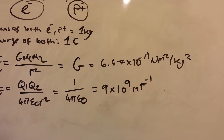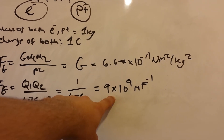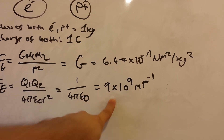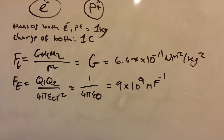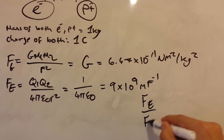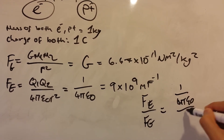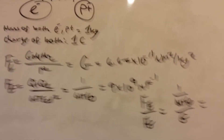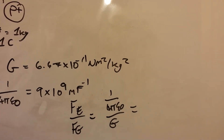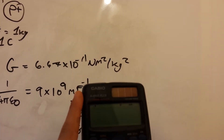You can see clearly that the electric force is much, much bigger than the gravitational force. Let's work out how much greater it is — we need to do the electric force divided by the gravitational force and put that into our calculator to see how much bigger the electric force is.